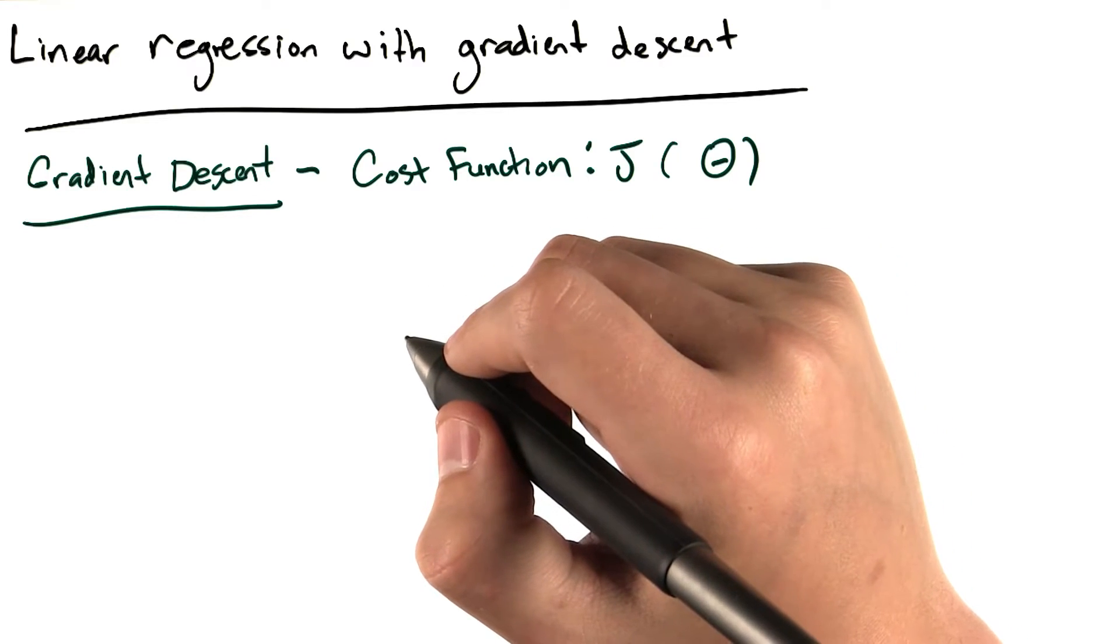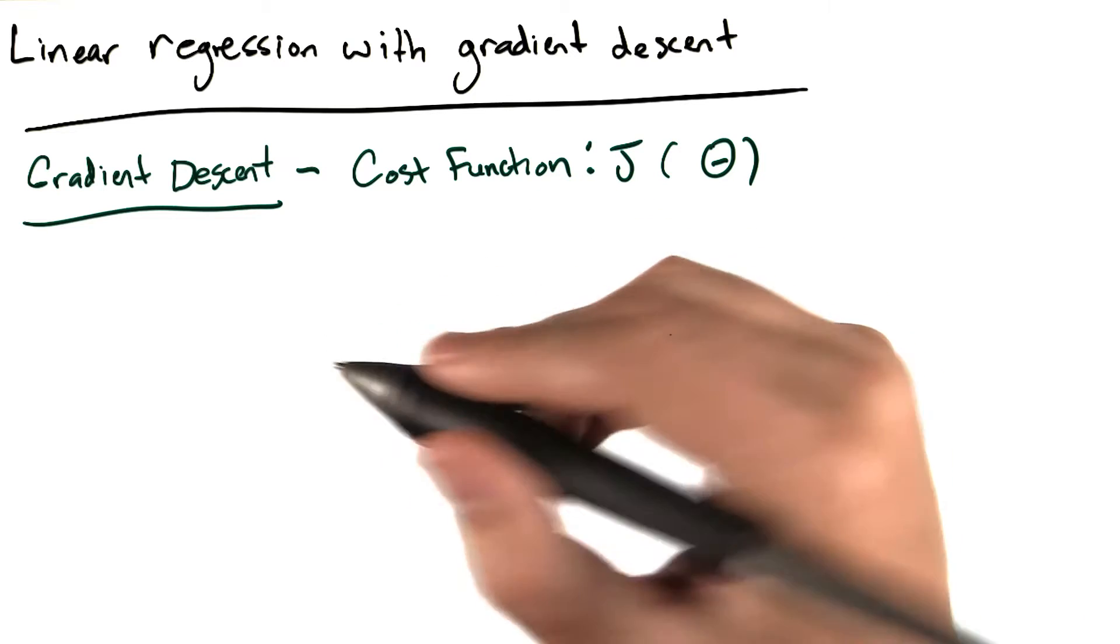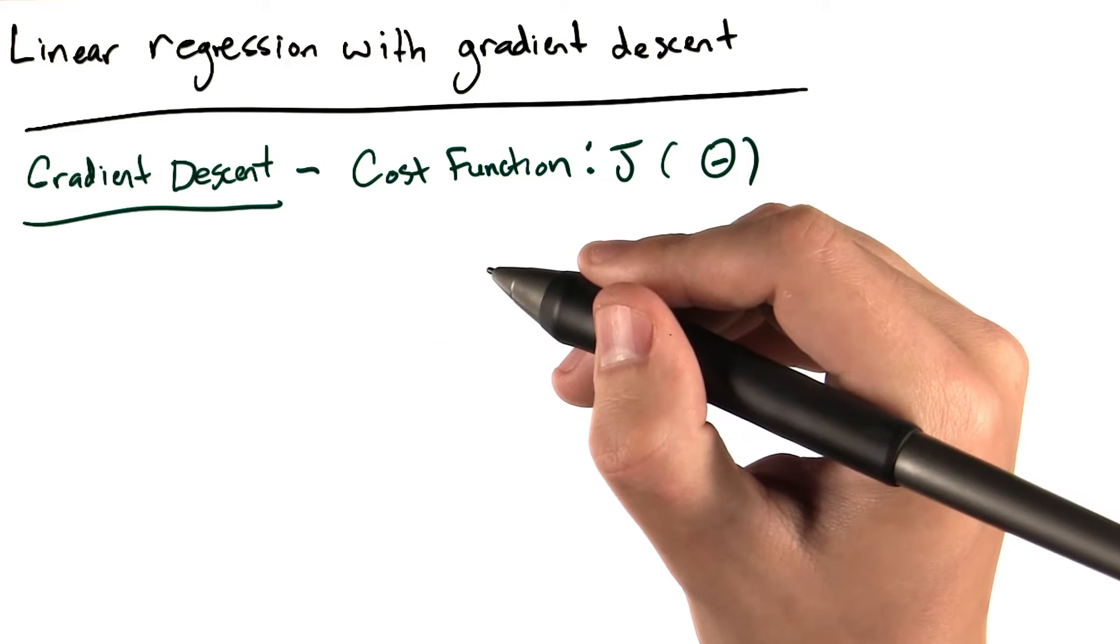So we've determined that we want to figure out which set of parameters provide the best predictions for our output variable. But how can we do that? We'll use an algorithm called gradient descent.